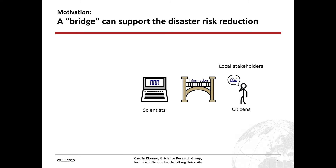So that local stakeholders and scientists can use it. We also have to integrate different sciences because it's subjective data and we're integrating people. So we also need to consider social sciences and humanities, and not only natural sciences. So we have here an interdisciplinary and transdisciplinary approach because we are dealing with local stakeholders and citizens.